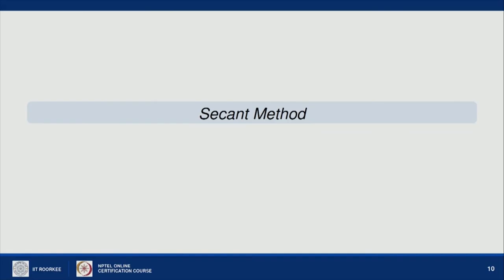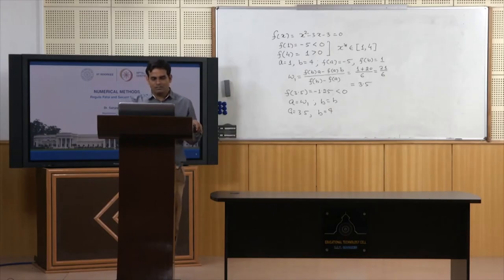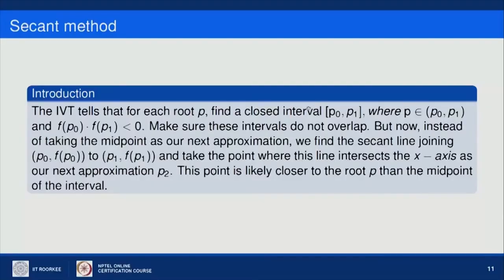The next method is the Secant method, which is a sort of Regula Falsi method. The intermediate value theorem tells us: for each root p, find a closed interval [p₀, p₁] where f(p₀)·f(p₁) < 0. Instead of taking the midpoint as the next approximation, we find the secant line joining (p₀, f(p₀)) to (p₁, f(p₁)) and take the point where this line intersects the x-axis as p₂. This point is likely closer to the root than the midpoint.